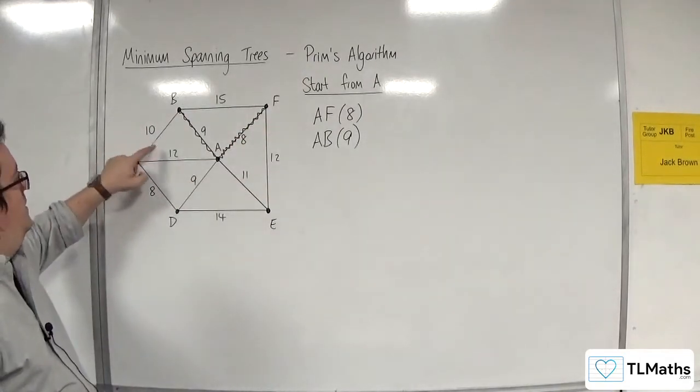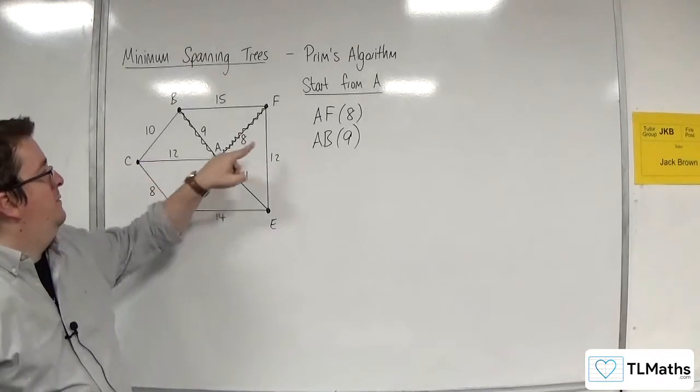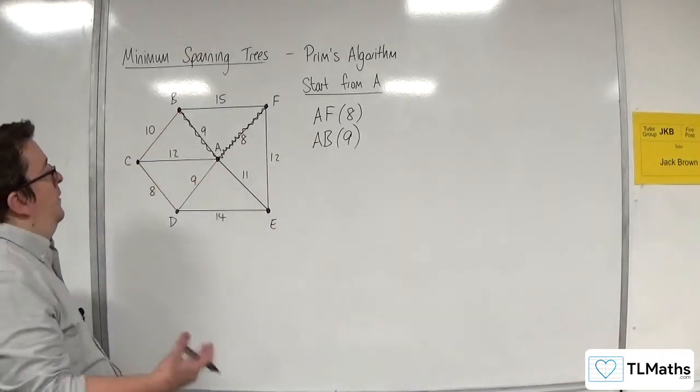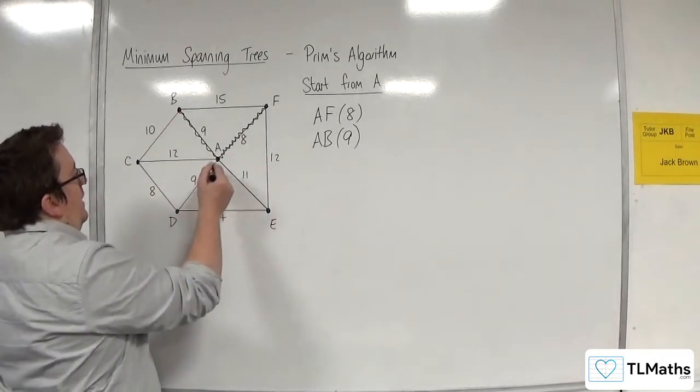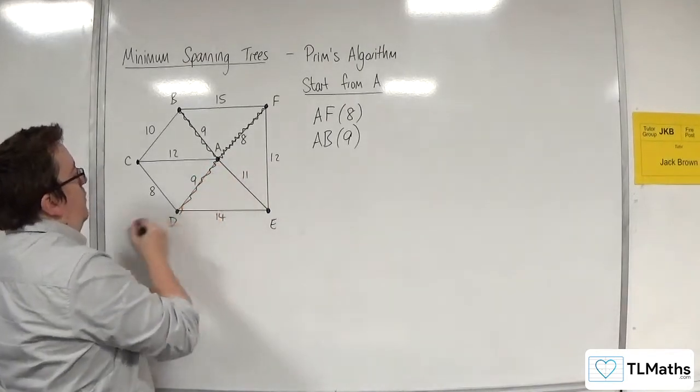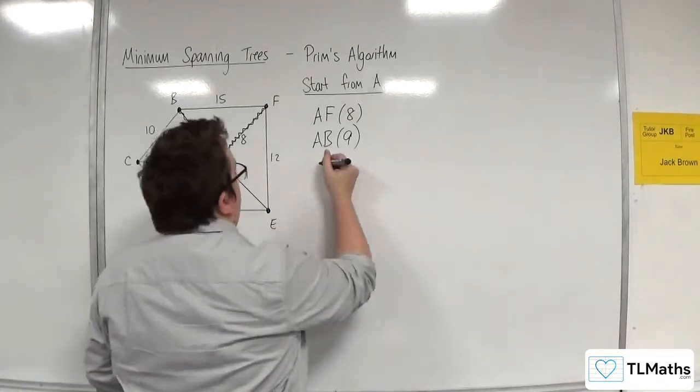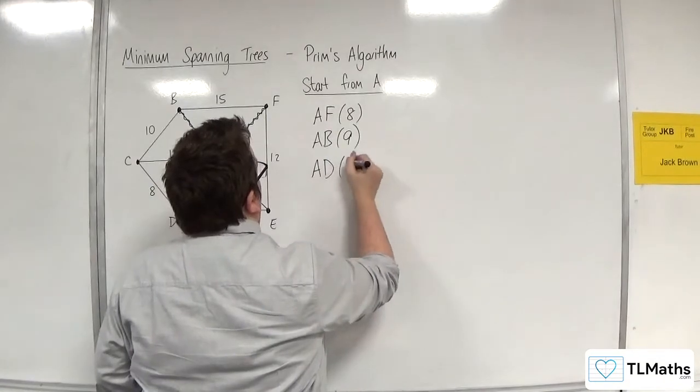So we've got 10, 12, 9, 11, 12, or 15. Well, the next smallest is the 9, A, D. So that's all good. That won't create a cycle. So A, D with 9 is my next one.